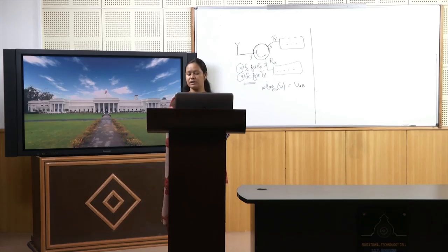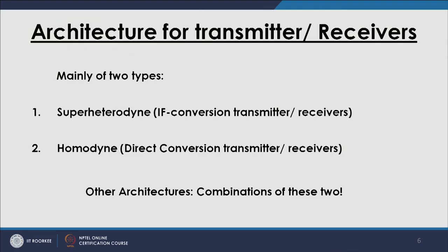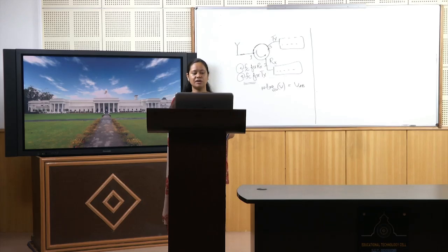Now that we have looked at these components, let us go to the architecture of transmitters and receivers. There are mainly two types of architecture: one is called super heterodyne, also called IF conversion transmitter/receiver, and the other is homodyne, also called direct conversion transmitter/receiver. Other names for homodyne include synchrodyne and zero-IF transmitter. There are also architectures that are combinations of these two.